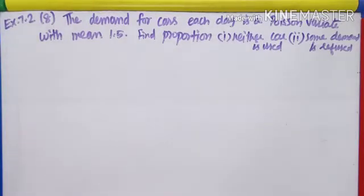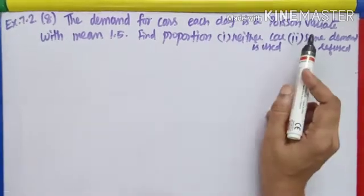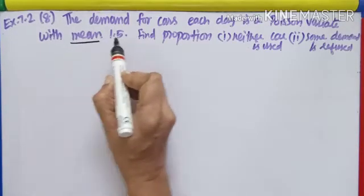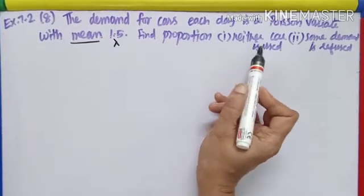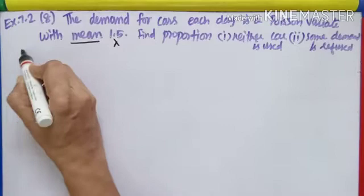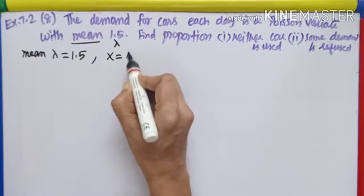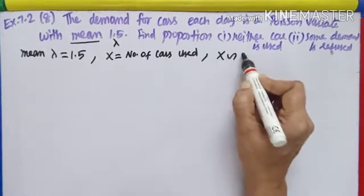Good morning children. Let us proceed with Exercise 7.2, problems based on Poisson distribution. Question number 8: the demand for cars in a hiring shop each day is a Poisson variate with mean 1.5. As I read 'mean', I will immediately term it as lambda. Find the proportion for neither car is used or some demand is refused. Since lambda is given, we write mean lambda equals 1.5. X is the number of cars used, and X follows Poisson with parameter lambda.